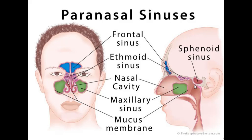The nerve supply of the sphenoid sinus is the posterior ethmoidal nerve as well as the pterygopalatine ganglion — I call it PPG. The venous drainage is the pterygoid plexus of veins and the cavernous sinus. And the lymphatic drainage is the retropharyngeal lymph node — the odd one out, since it's at the base of the skull.